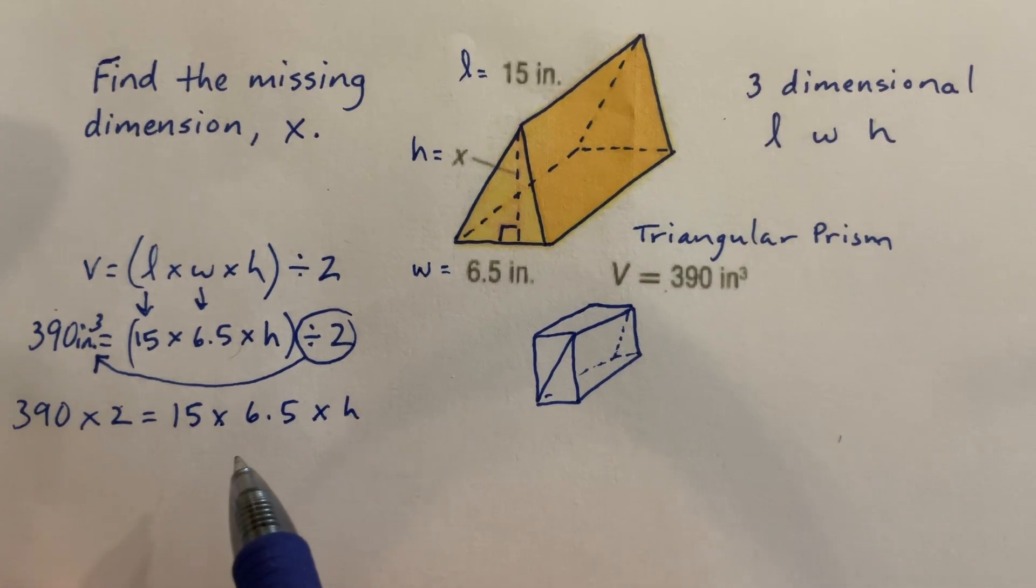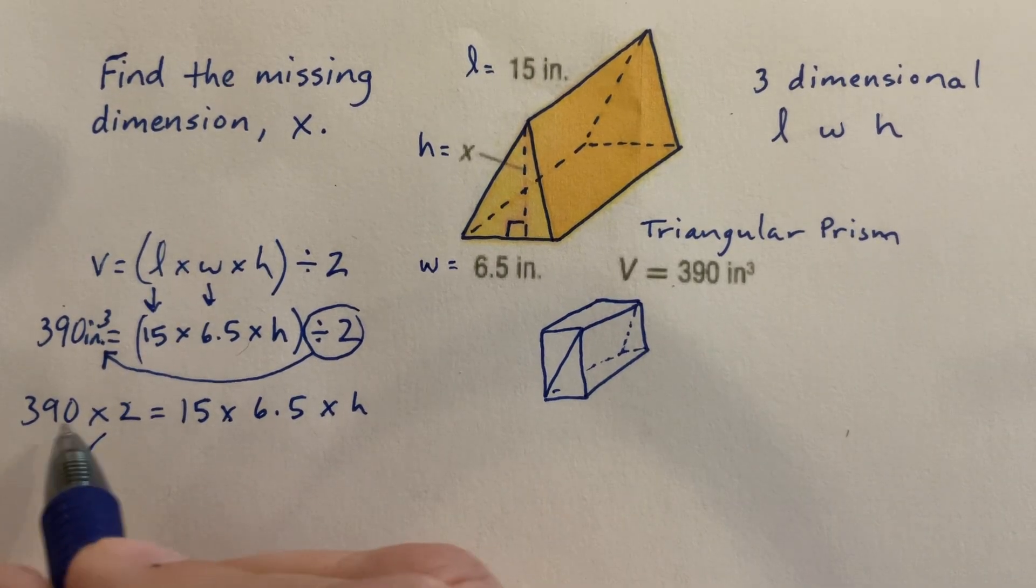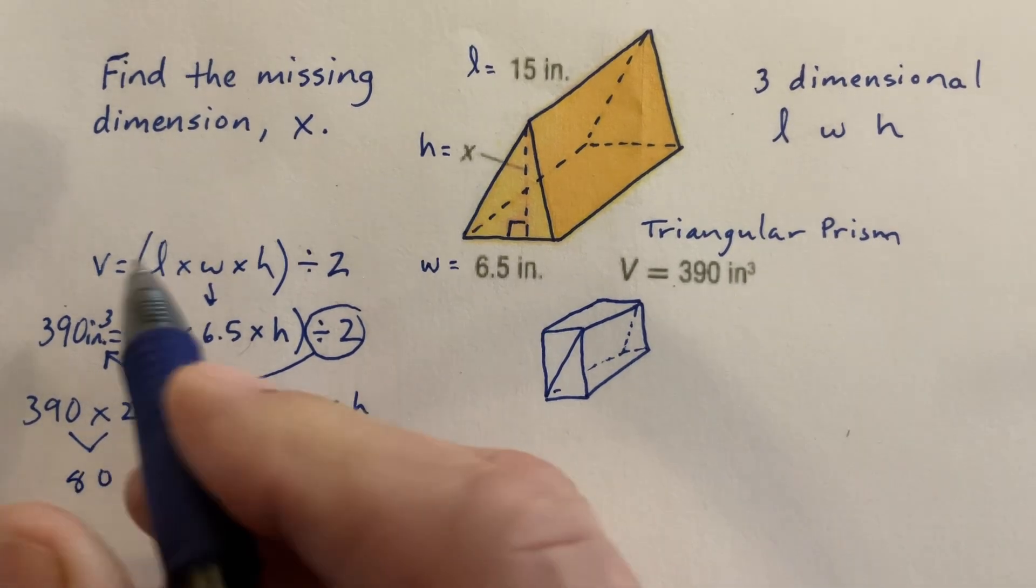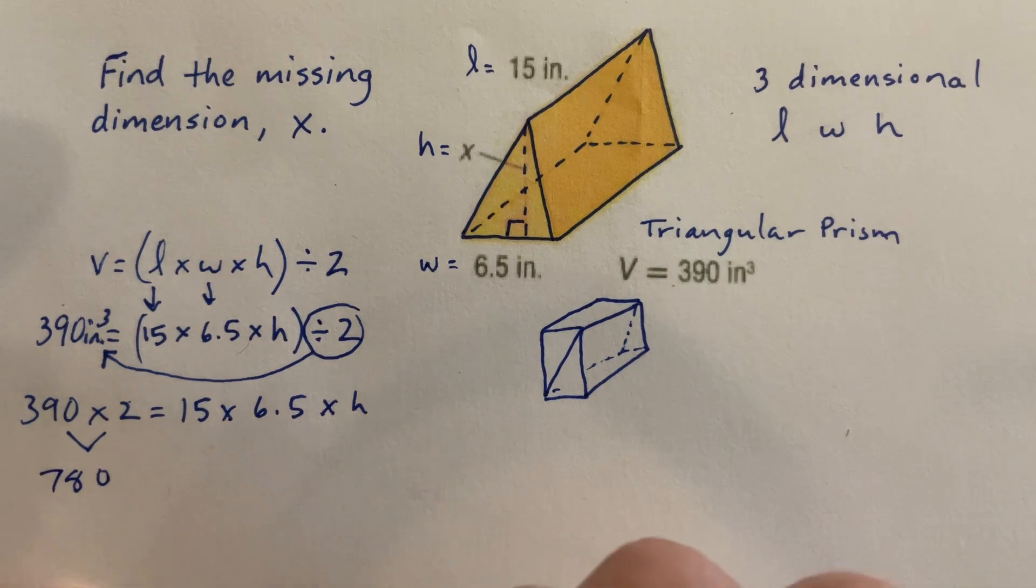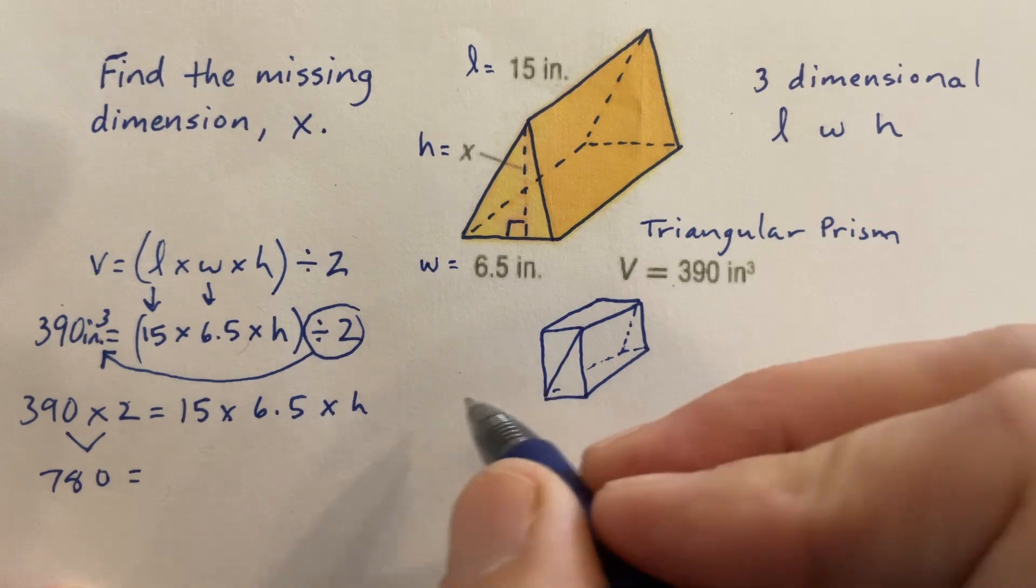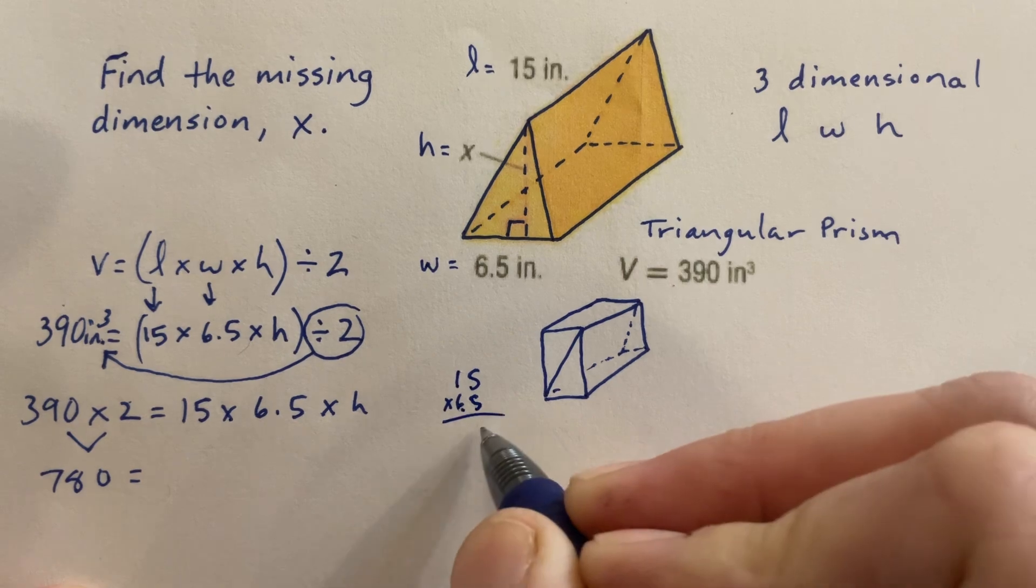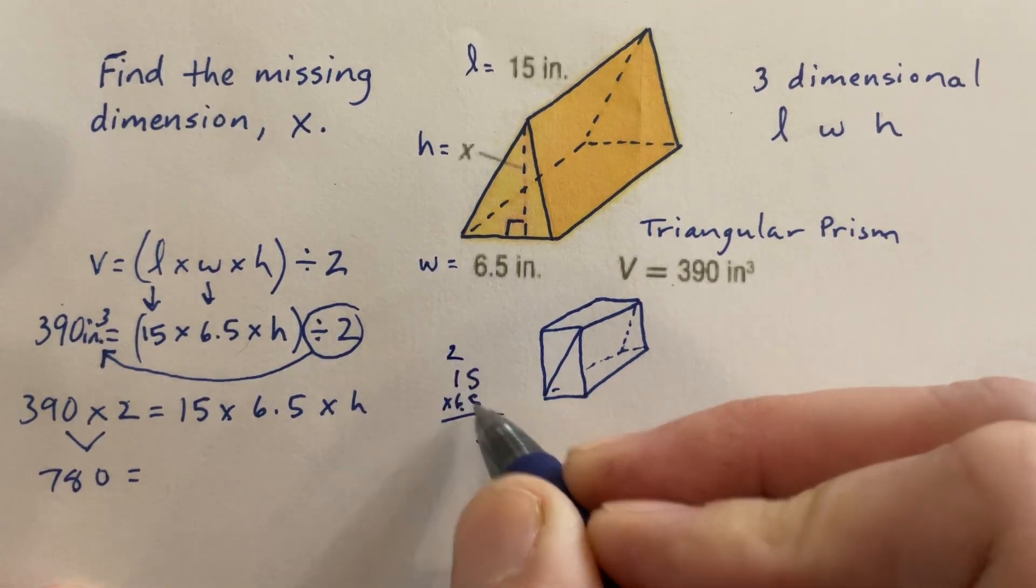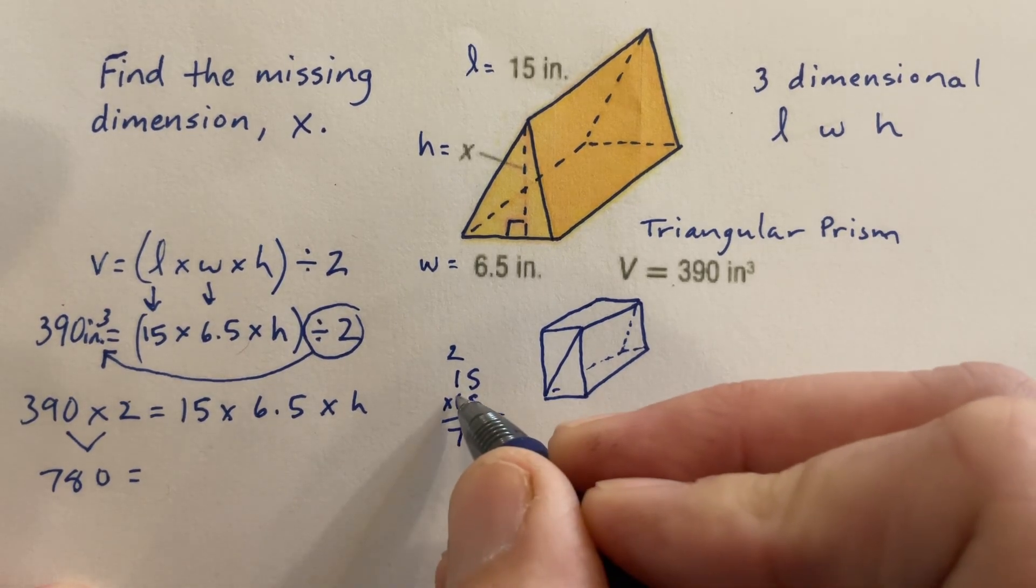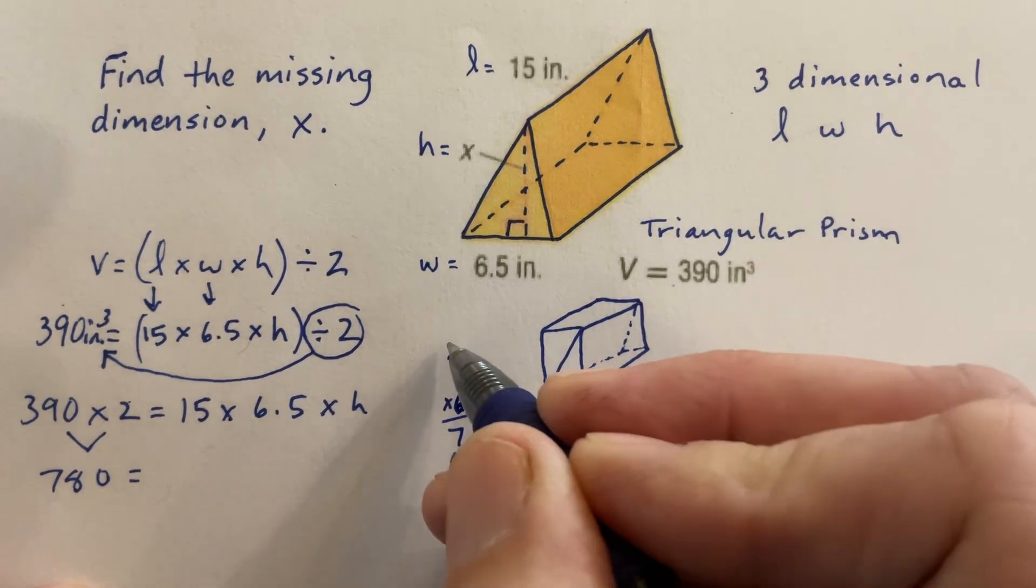And we still have 15 times 6.5 times h, what we're trying to find. Now, I can make this more simple here by going ahead and solving some of this stuff. 390 times 2 is going to be 780. I can do 15 times 6.5 to make it more simple over here. 5 times 5 is 25. 5 times 1 plus 2 is 7. Put my placeholder. Multiply, 6 times 5 is 30.